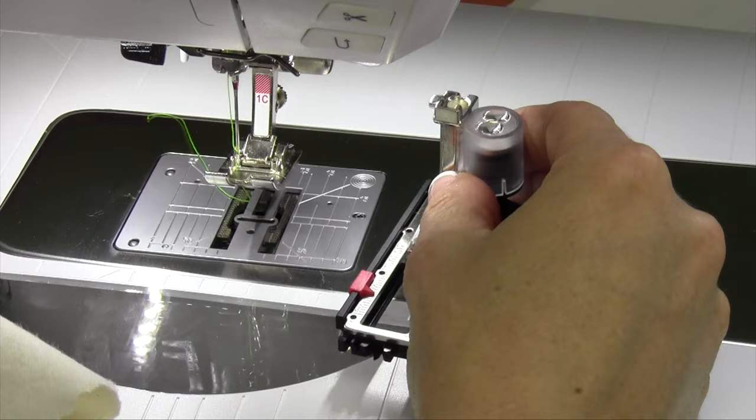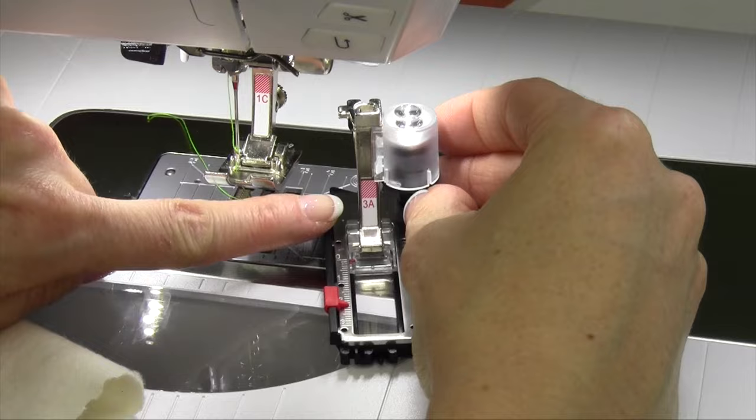For the second mending stitch, stitch number 23, you're going to notice that when you pick it, it recommends foot 3A. As we switch this over, that means we can actually, like a buttonhole, predetermine the length.